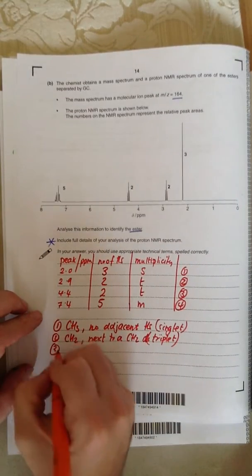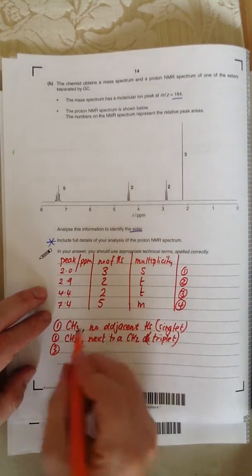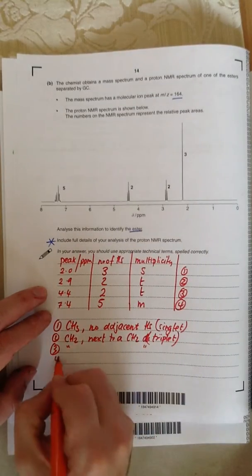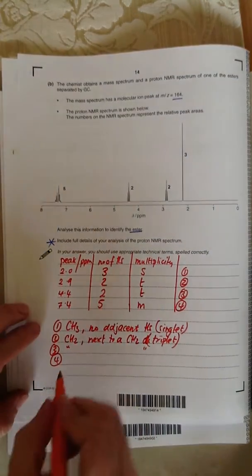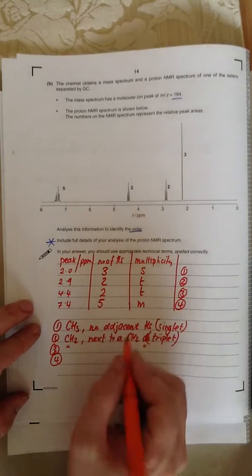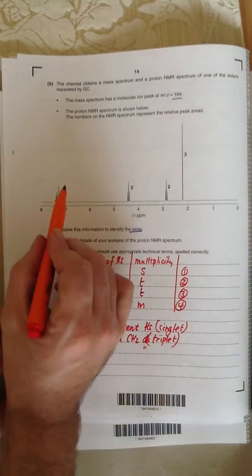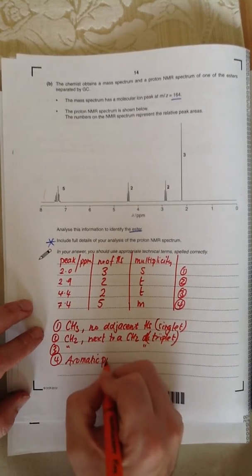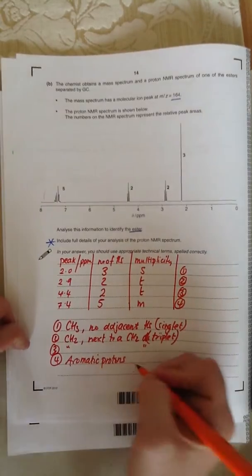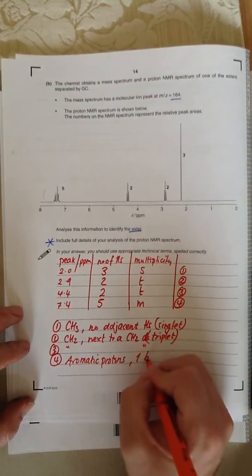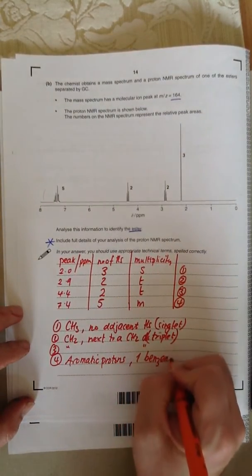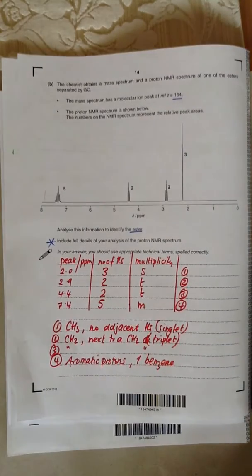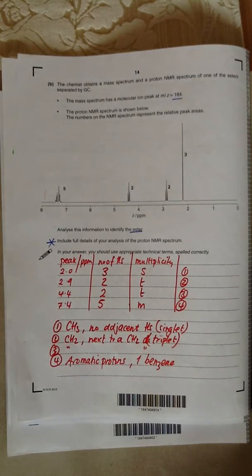Same for part 3. Peak 3 is a CH2 triplet. Peak 4 is, there are 5, and it's a multiplet. Look at the chemical shift. The chemical shift is above 7. So these are aromatic protons. And there is one benzene ring. How have I known there's one? Because there's 5 H's.